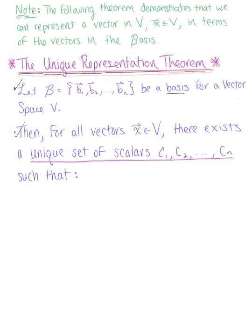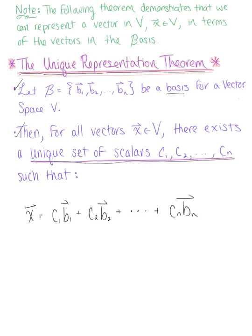Then, for all vectors x in our vector space v, there exists a unique set of scalars c sub 1 through c sub n such that vector x can be written as a linear combination of the vectors in the basis: c sub 1 times vector b sub 1 plus c sub 2 times vector b sub 2, all the way up to c sub n times vector b sub n.